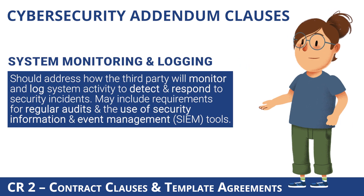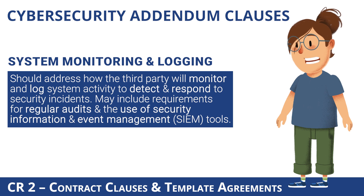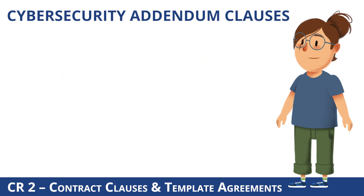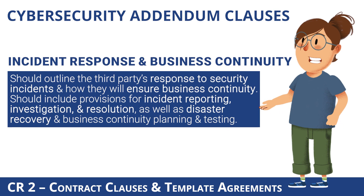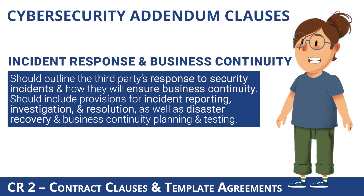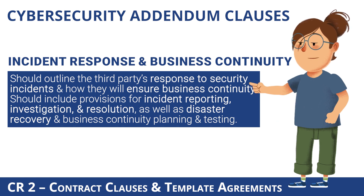System monitoring and logging — this clause should address how the third party will monitor and log system activity to detect and respond to security incidents, and may include requirements for regular audits and the use of security information and event management, or SIEM, tools. Incident response and business continuity — this clause should outline the third party's response to security incidents and how they will ensure business continuity, including provisions for incident reporting, investigation, and resolution, as well as disaster recovery and business continuity planning and testing.